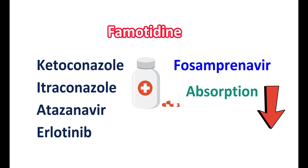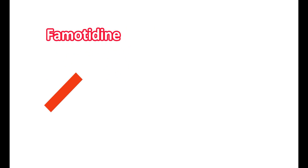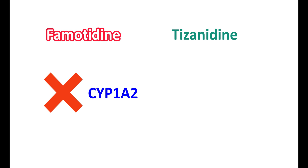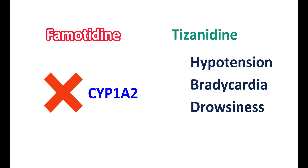A sufficient gap should be maintained when famotidine is administered along with these drugs. Famotidine also acts as a weak inhibitor of the CYP1A2 enzyme. Tizanidine, a centrally acting muscle relaxant used to relieve muscle spasms and cramps, is metabolized by CYP1A2 in the liver. When taken along with famotidine, this metabolism is inhibited, leading to increased tizanidine levels in the body and an increased risk of hypotension, bradycardia, and excessive drowsiness.